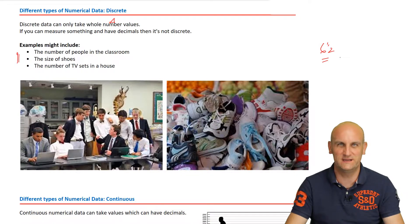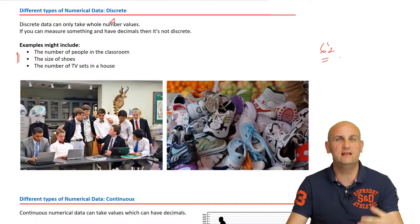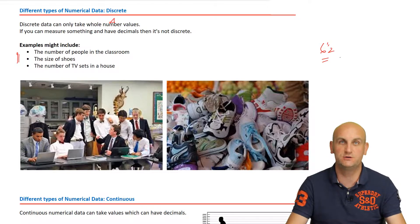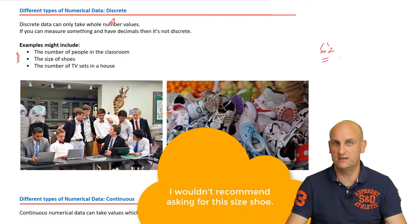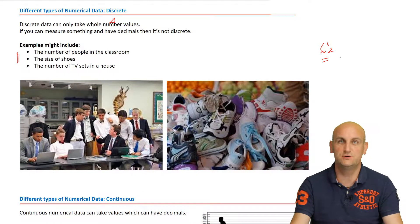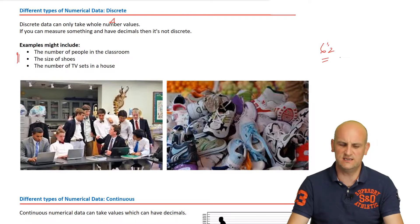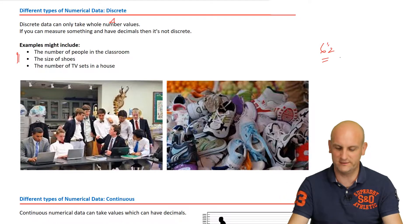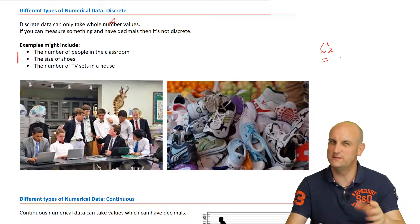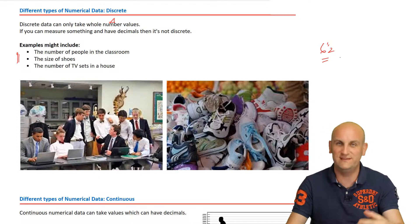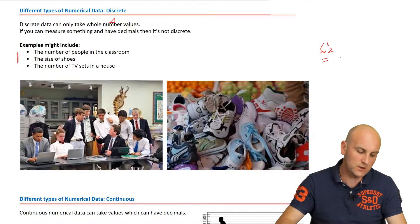Shoe sizes are actually discrete data — whole number data — even though someone once decided to confuse things by adding a decimal point. So the size of shoes is a bit of a tricky one, but actually it is discrete. What about the number of TV sets in a house? That is also discrete — you can't have 3.7 TV sets. So that's discrete data.